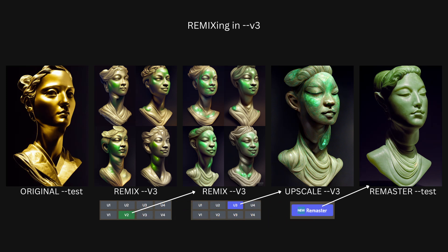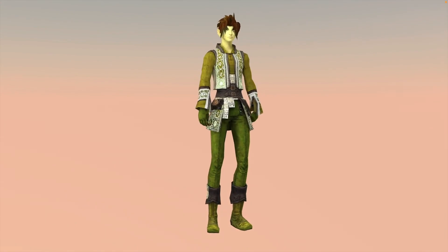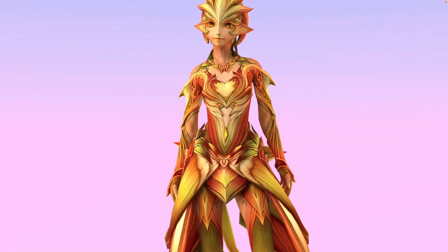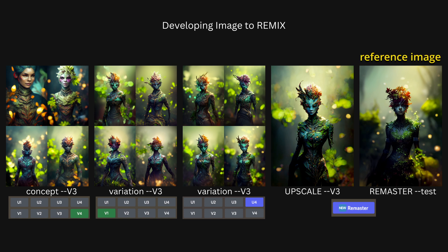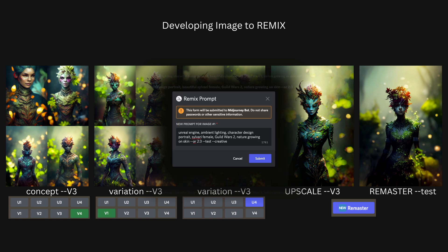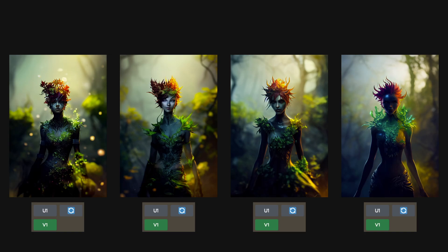The two examples so far are relatively simple, consisting only of a subject with a plain background. For a more complex remix, I'm using characters from the game Guild Wars 2 called Sylvari — botanical humanoids I wanted to recreate using Midjourney. I began in V3 to obtain the composition before upscaling and remastering, which renders and converts to Test. Once I had my reference image, I wanted to change the Sylvari character from female to male. Unfortunately, Midjourney was not really changing the character to male when remixing in Test.